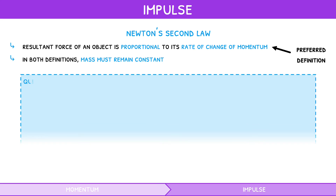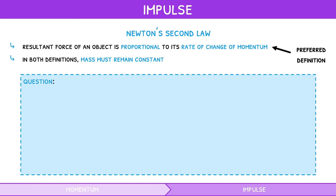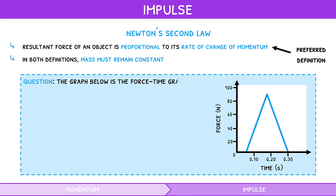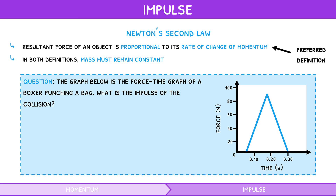Let's look at an example question. The graph below is the force-time graph of a boxer punching a bag. What is the impulse of the collision? The impulse equals the area under the line, which is one half times base times height. Thus, the impulse is 11 kilograms meters per second.